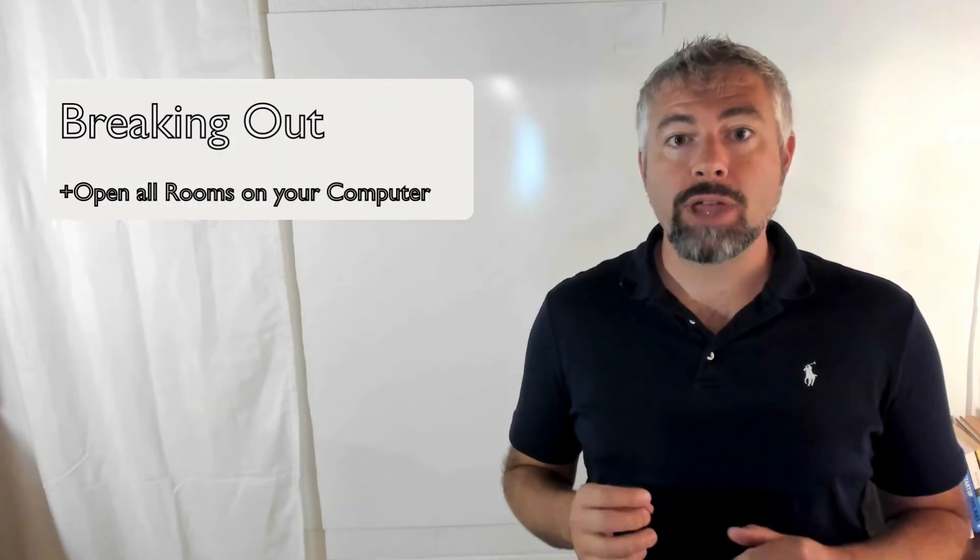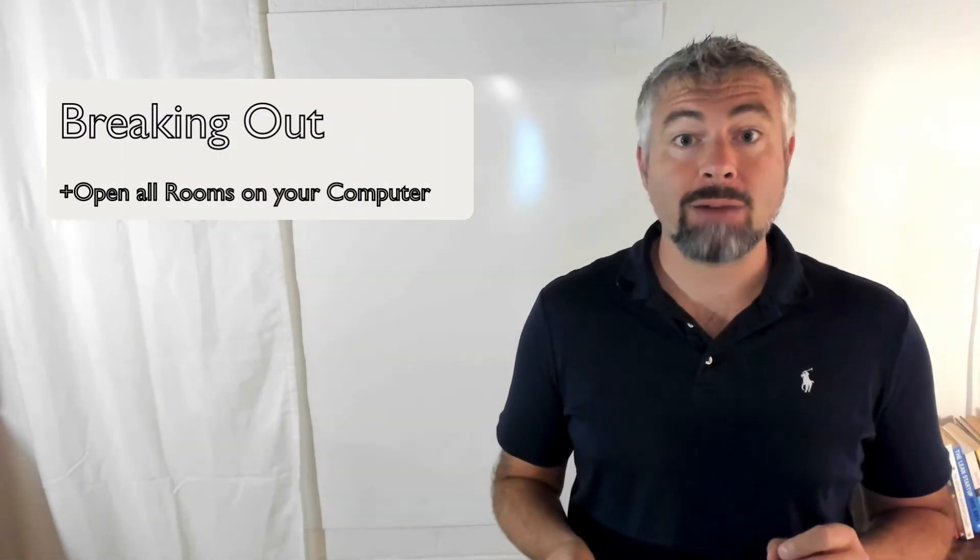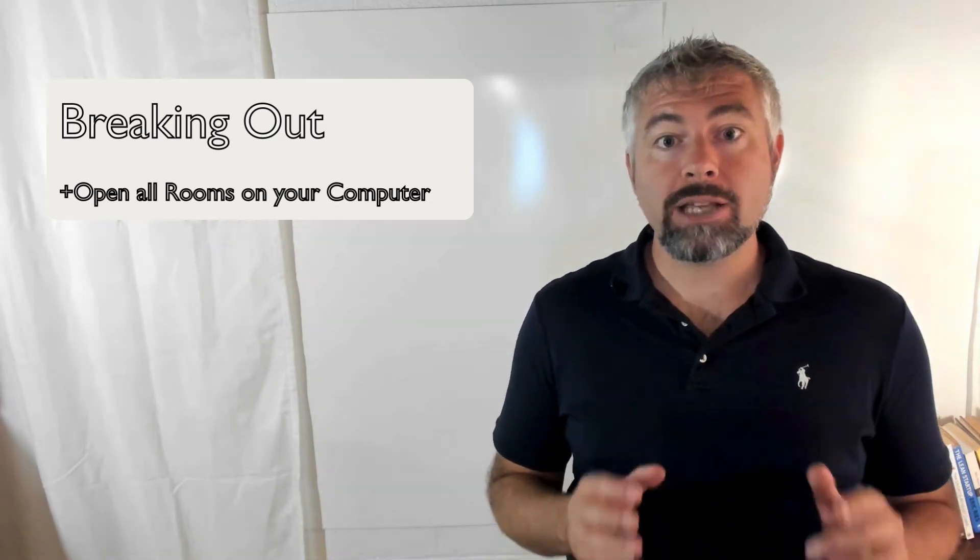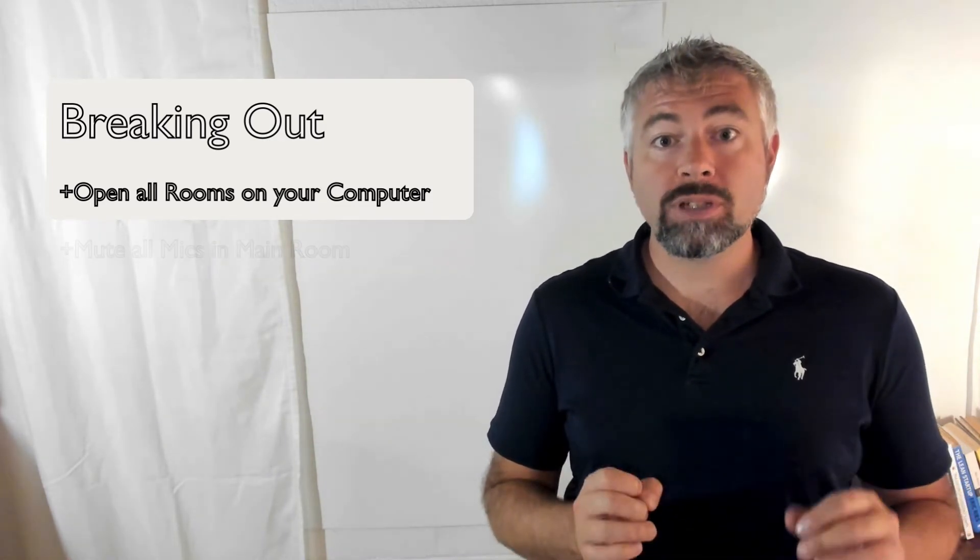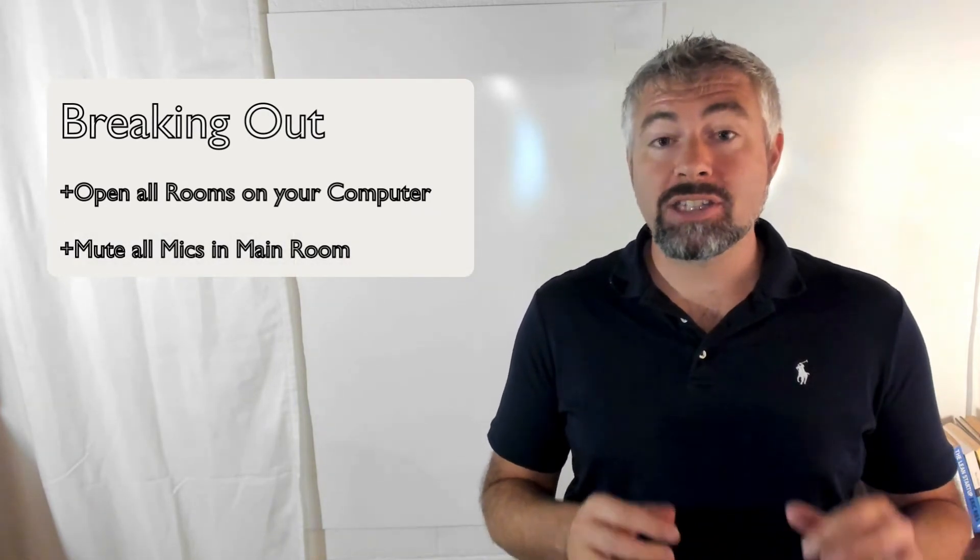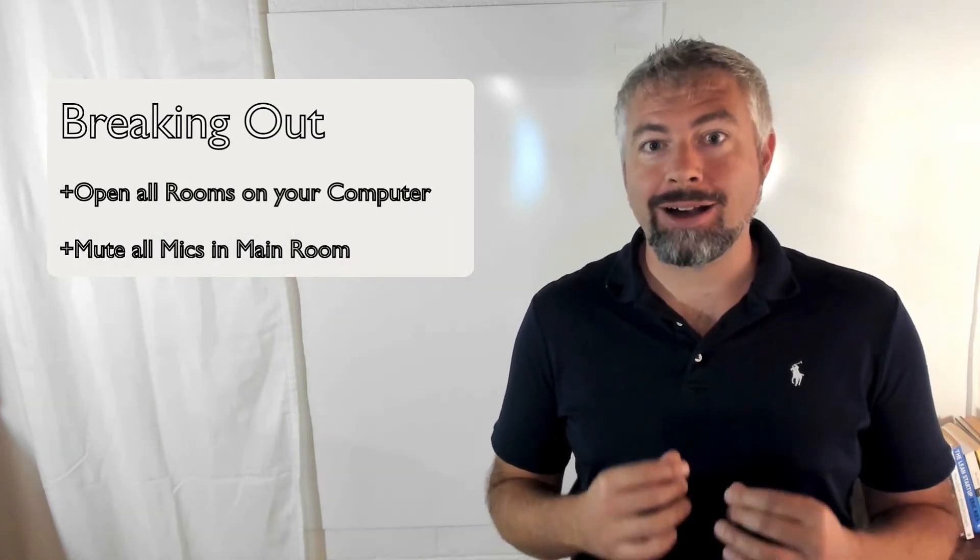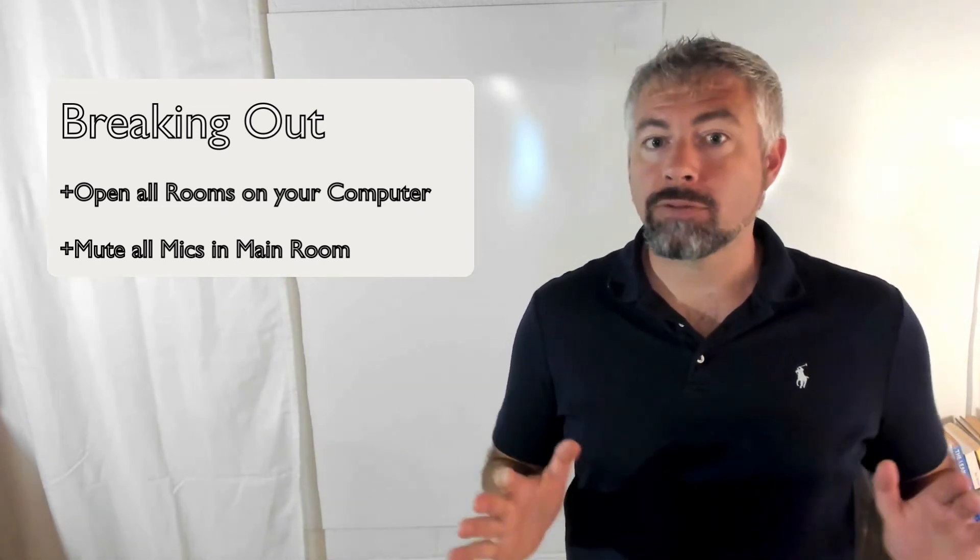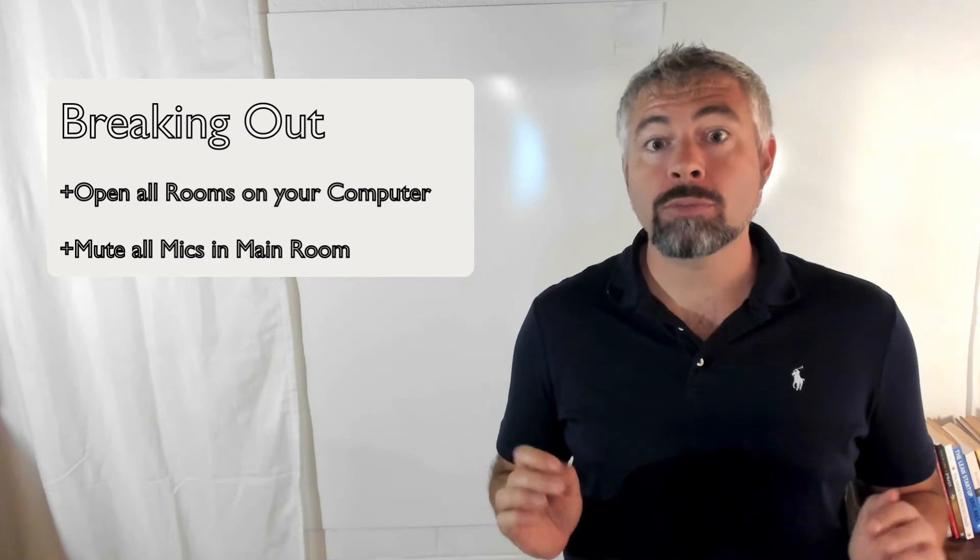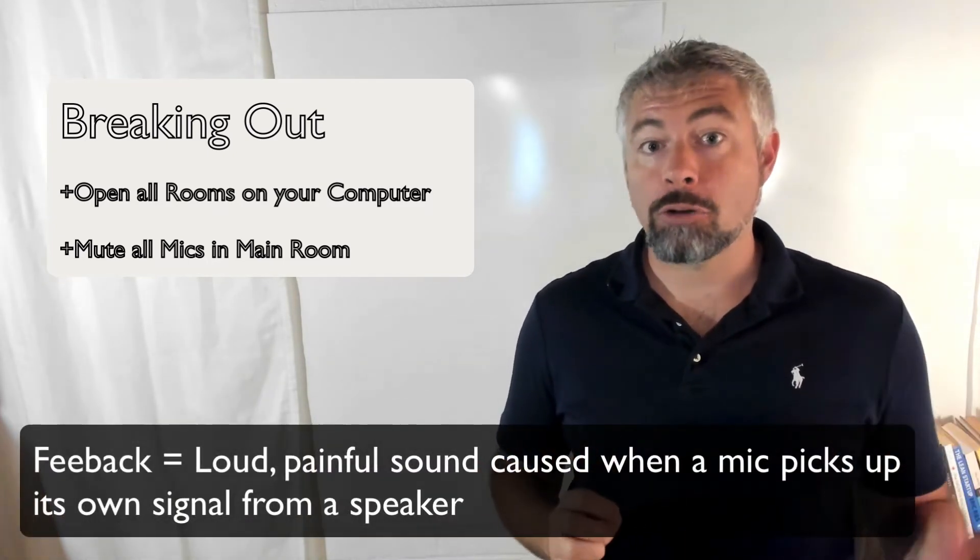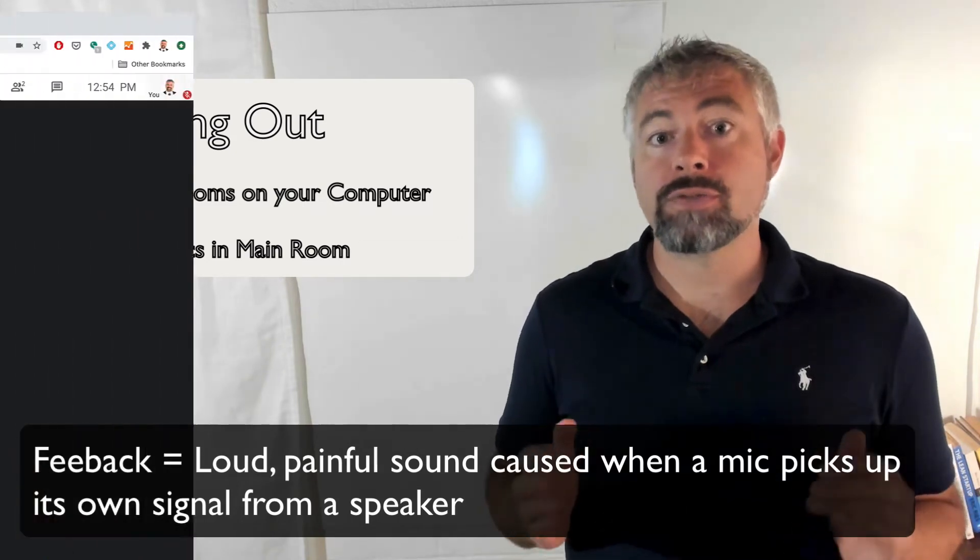Before I enter each room I make sure that my mic is muted and my camera is off and when you're ready to send your students to their breakout rooms make sure that everyone's mic is muted in the main room especially your own mic. You're not going to be able to actually talk into any microphones when your students are in breakout rooms or you're going to get a ton of feedback or if a student leaves their mic on in the main room it's going to cause feedback for everyone.